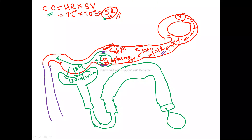So with a cardiac output of 5 liters, 20 percent goes to the kidneys — that is 1000 ml. Of that, 600 ml is plasma and 20 percent of the plasma undergoes filtration, giving 120 ml per minute as the normal GFR. For easy calculation, I am taking 100 ml — most books give 120 ml but we will use 100 ml for simplicity.